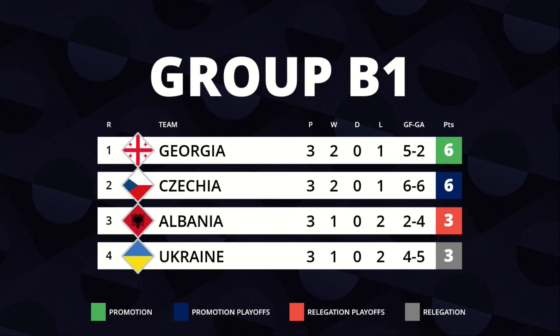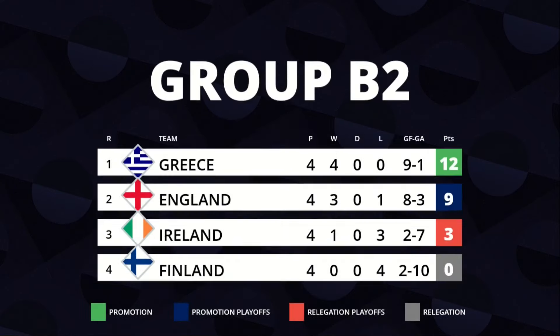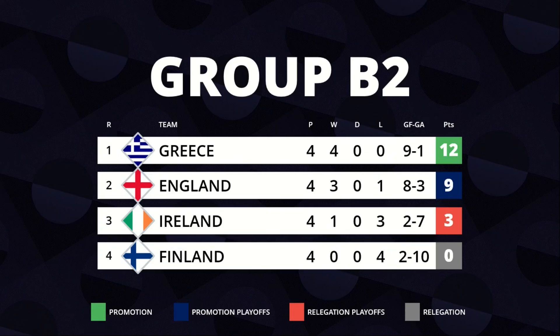League B Standings. Group B1: Georgia, Czechia, Albania and Ukraine.